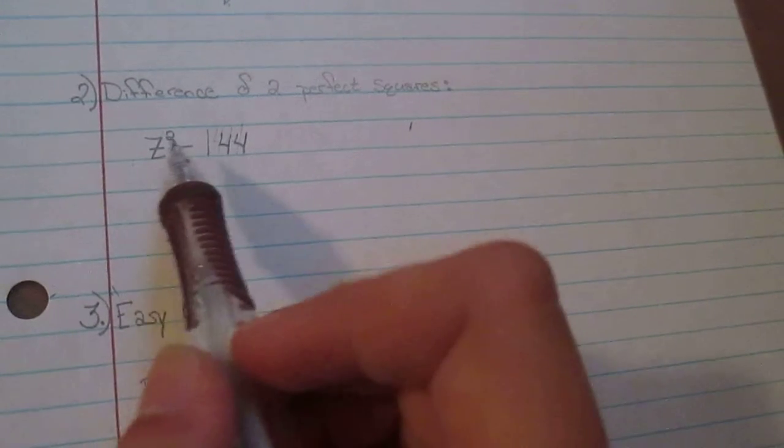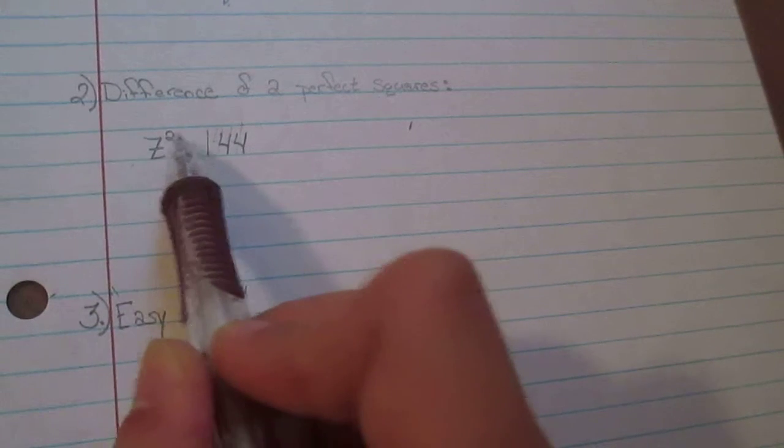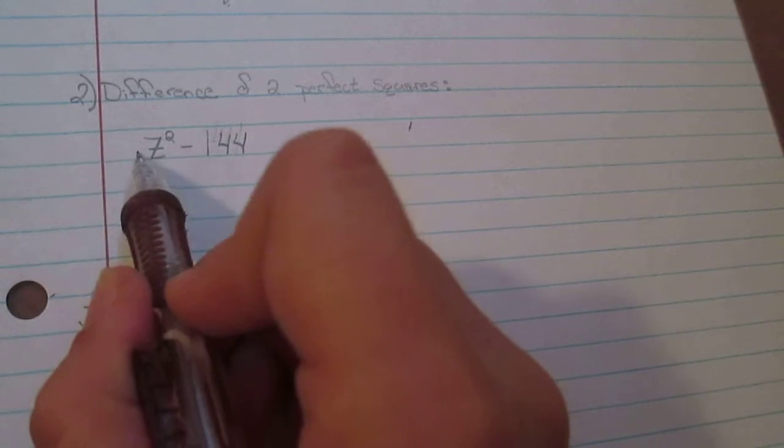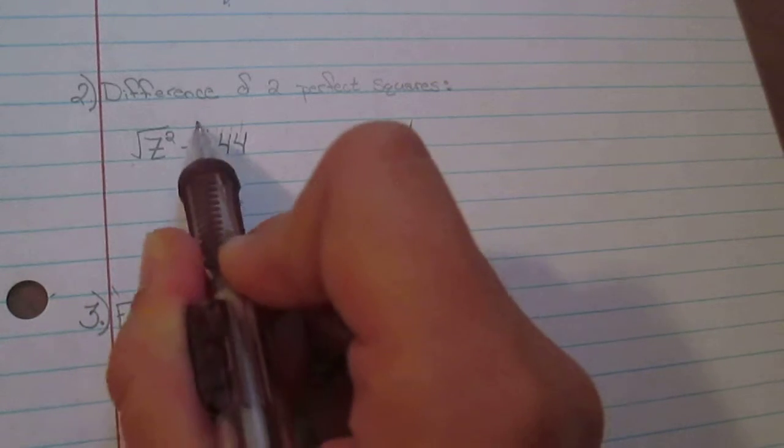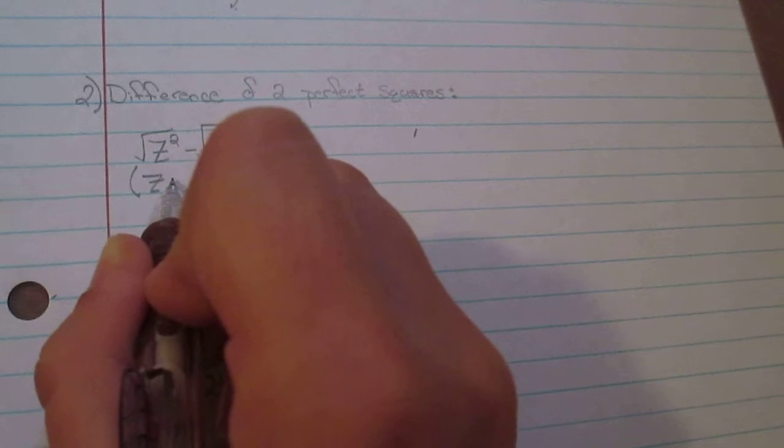Now for the difference of perfect squares I have this expression z² - 144. And to find the difference of the square, you're going to find the square root of each term. So the square root of z is going to be z and then the square root of 144 is 12.